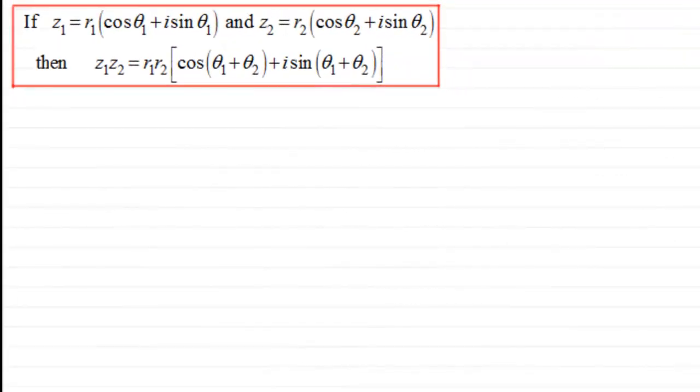Hi. Now in an earlier tutorial I showed you this result: if we had two complex numbers, say Z1 and Z2, given by Z1 equals R1 multiplied by cos θ1 plus i sin θ1, and a similar result for Z2.